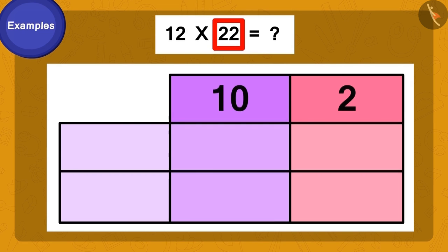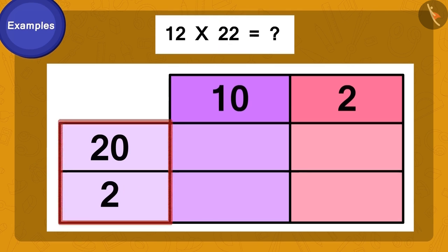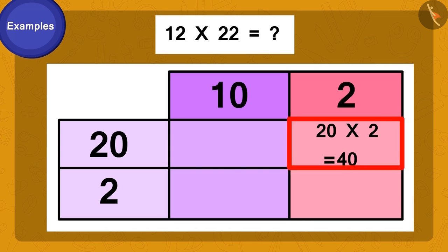Now, we first multiply the 2 of 12 by 20 of 22. 20 times 2 is 40. We will write this answer here.